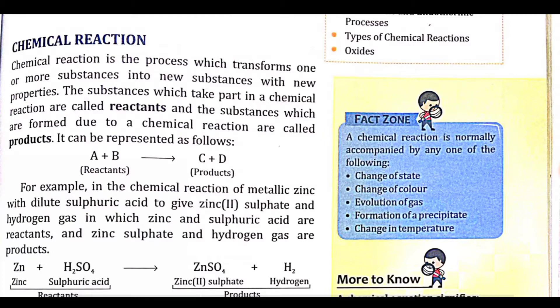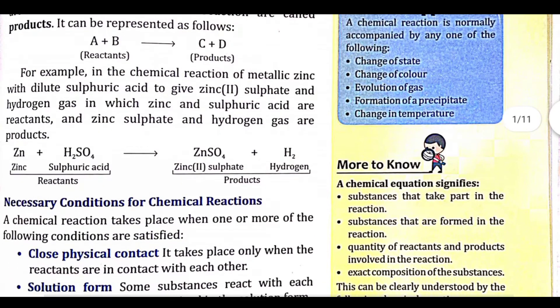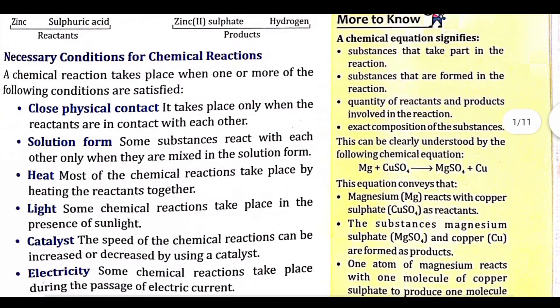The substances which take part in a chemical reaction are called reactants — A and B in the equation. The substances formed as a result of chemical reactions are called products. For example, metallic zinc and dilute sulfuric acid react together, producing zinc sulfate and hydrogen gas as products.